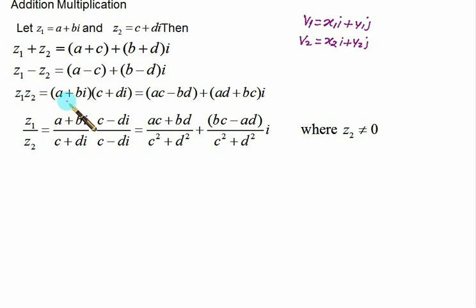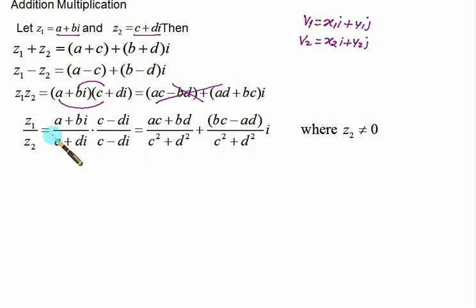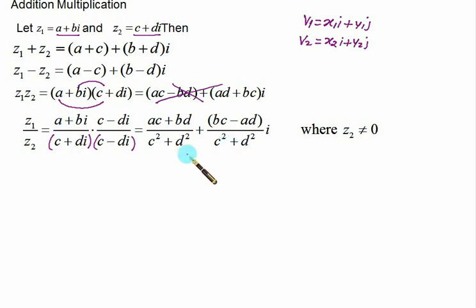To multiply two complex numbers, multiply in the regular fashion — first multiply a with both terms of the second, then multiply b with both terms. You will get one term equal to i², which equals -1, so the term -bd becomes positive. For division of z1 by z2, always take the conjugate of the denominator: c + di has conjugate c - di. Multiply numerator and denominator by c - di, so the denominator becomes a difference of squares, and because of -i², it becomes c² + d².